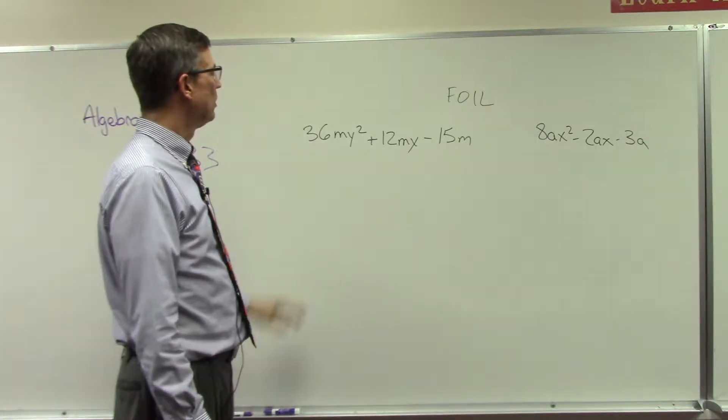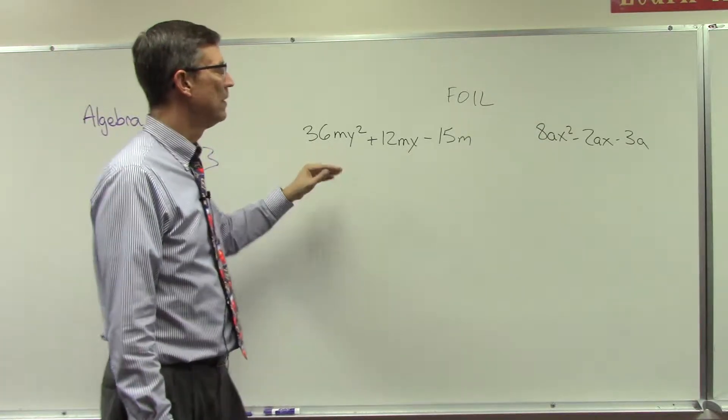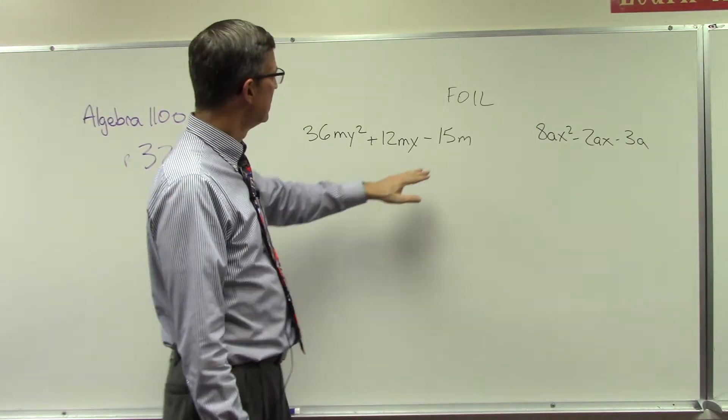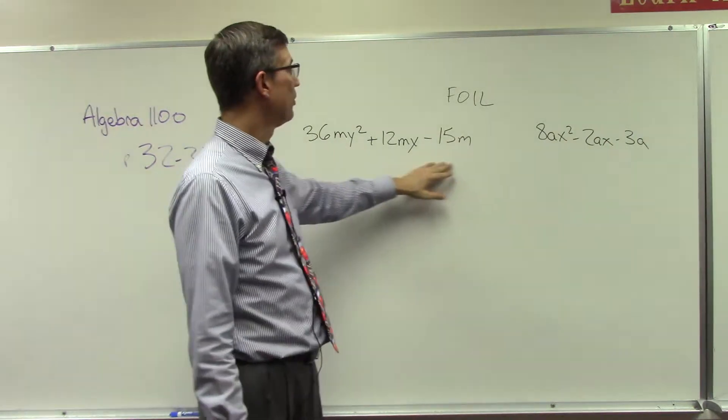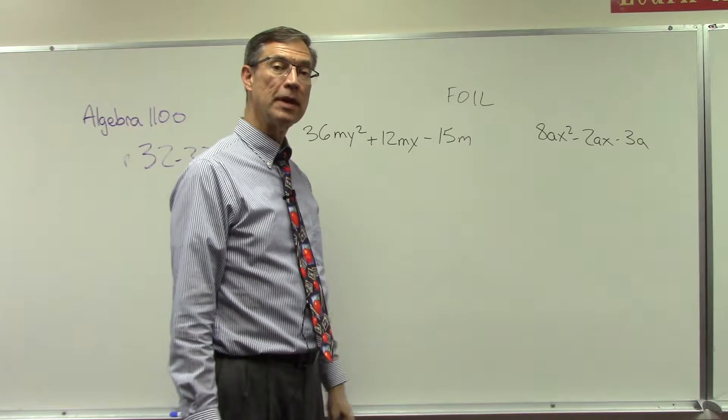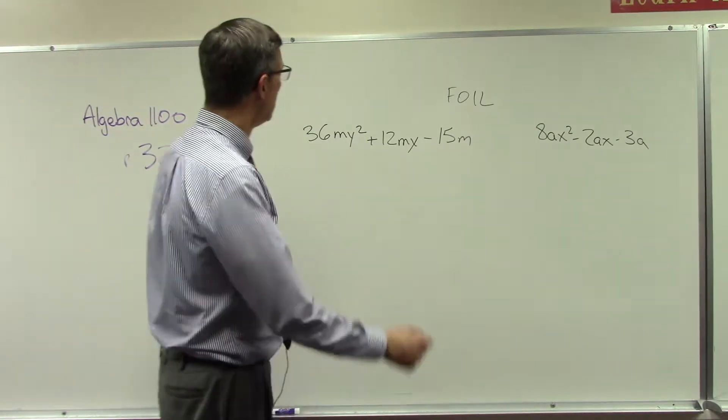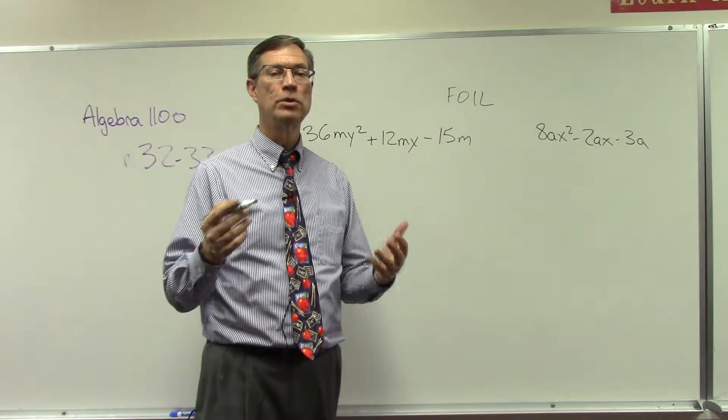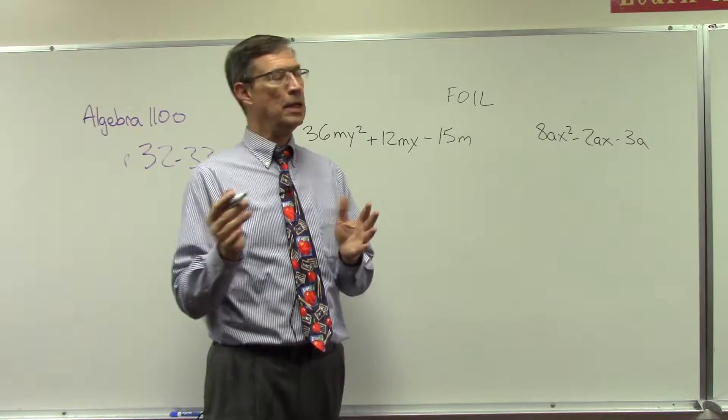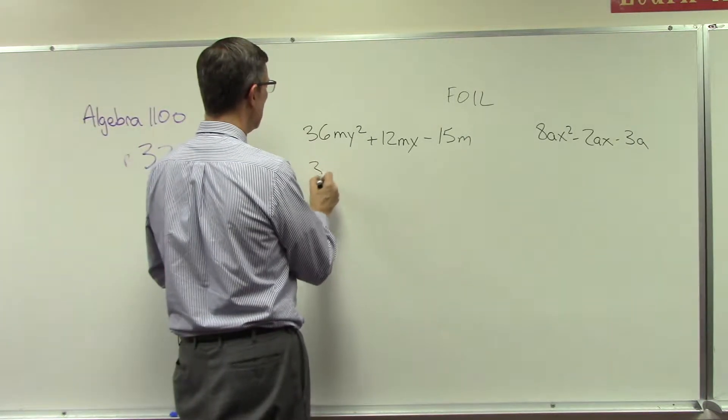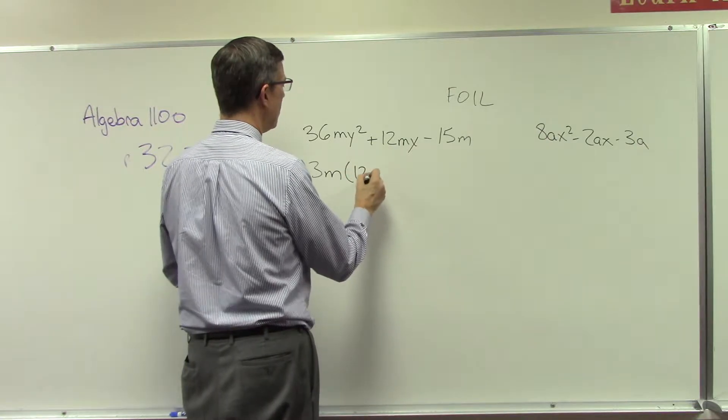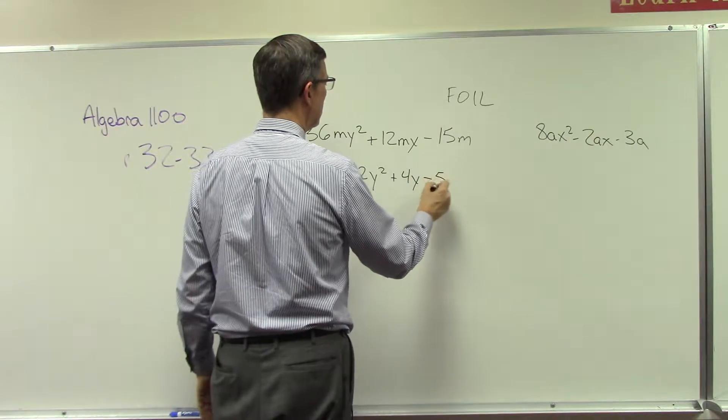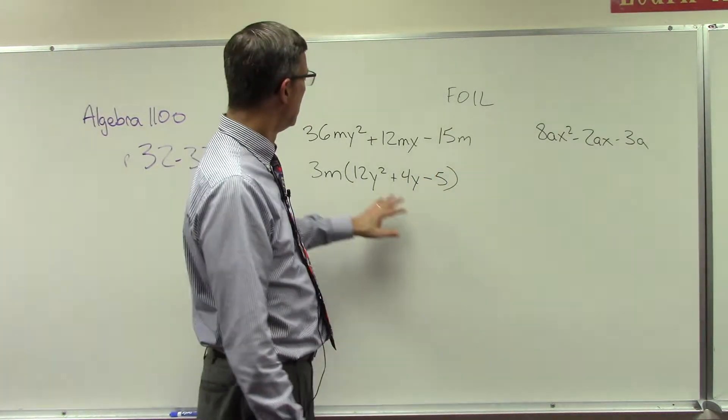So the first step is we want to see what is the common factor that we can factor out of the whole thing. I can see that from all of these I could take out a 3, and I can also take out M. Now some students try to just do this in their head and jump to the two parentheses, but you can't do that. Even as a teacher, I need to factor out the 3m, and that will give me 12y² + 4y - 5. So now we have a trinomial.